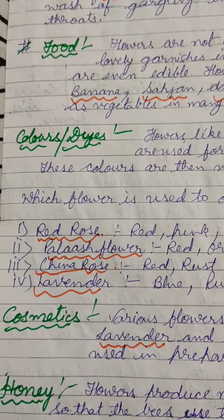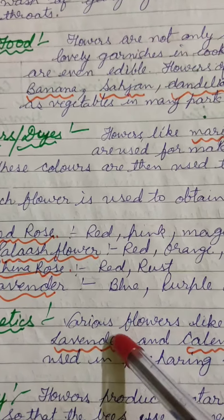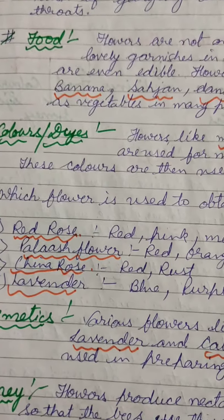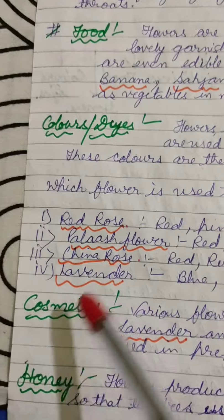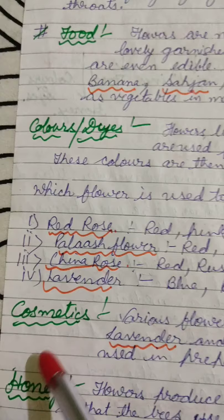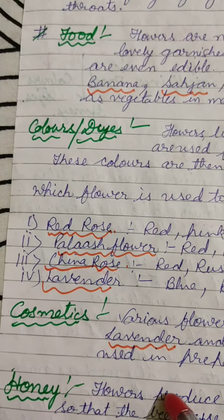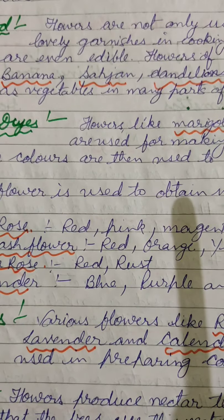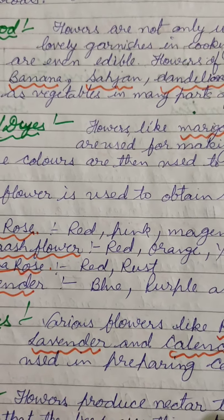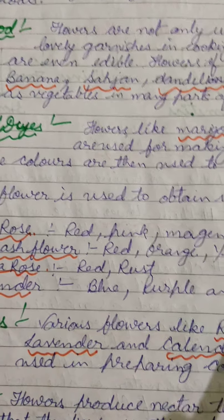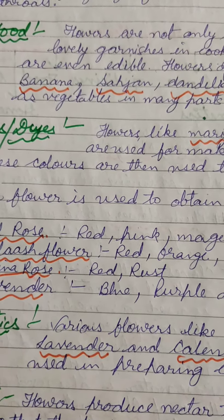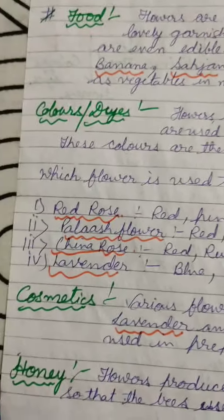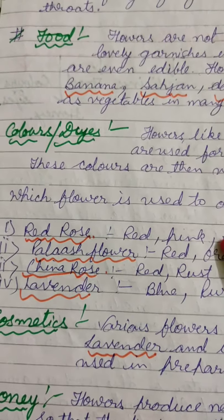Various flowers are also used in cosmetics. Flowers like lavender, rose, and jojoba are used for preparing various cosmetics. You are very familiar with honey, which is produced by honeybees. Honeybees suck the nectar from flowers, and this nectar — which is the juice obtained from the flower — is used by the honeybees to make honey.